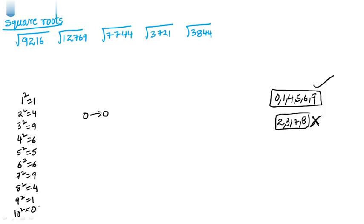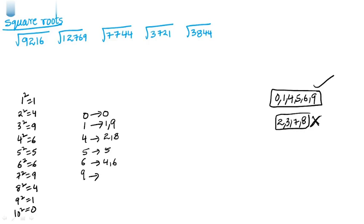For units place: if units place is 1, possibilities are 1 and 9. Units place 4 — possibilities are 2 and 8. Units place 9 — possibilities are 3 and 7. Units place 6 — possibilities are 4 and 6. Units place 5 — only possibility is 5. First step: separate the last two places. Then check the square formula possible values.